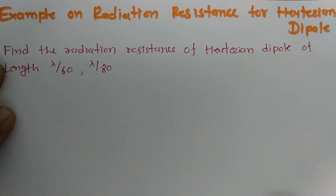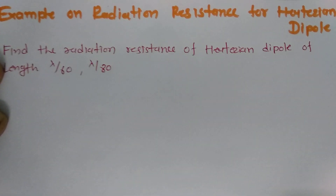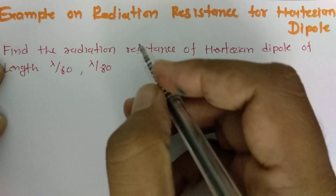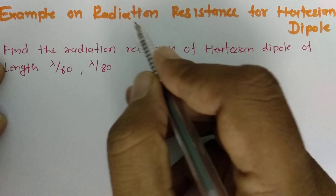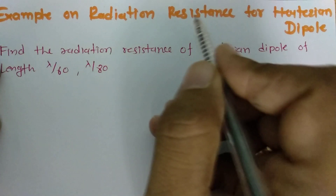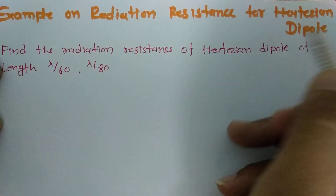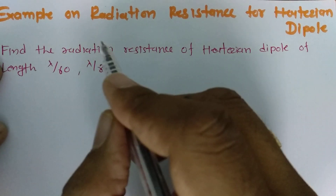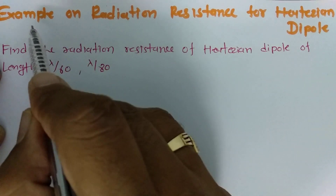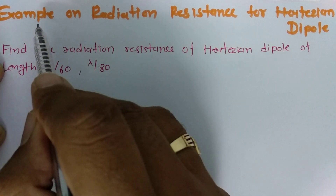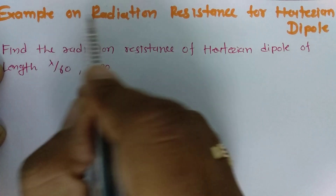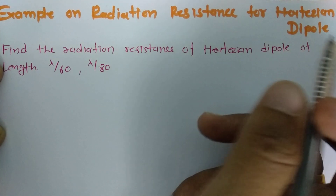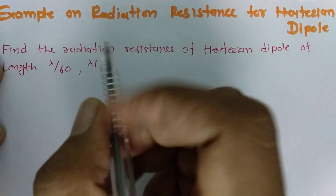Welcome to the antenna and wave propagation playlist. In the previous session, I derived radiation resistance for the Hertzian dipole. Now in this session, I will explain an example on radiation resistance for the Hertzian dipole antenna.